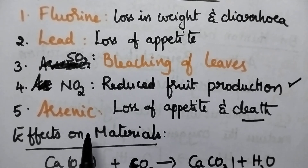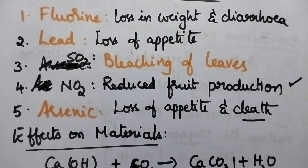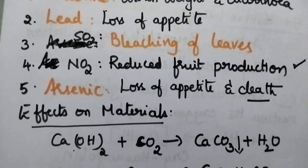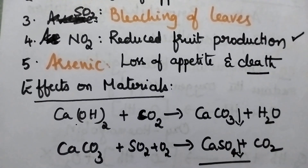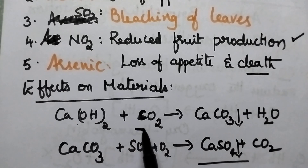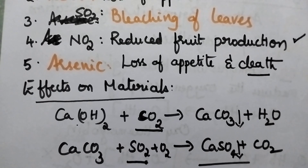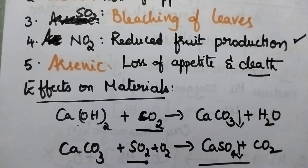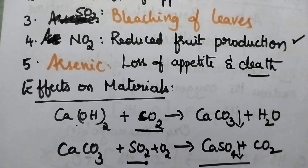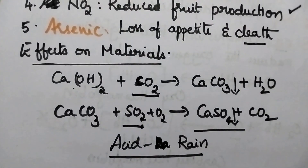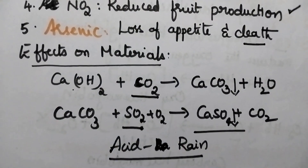Arsenic and asbestos are particularly dangerous. Regarding the effects on building materials, if the air consists of carbon dioxide or oxides of sulfur, it causes acid rain, which is responsible for the decrease in the strength of building materials.